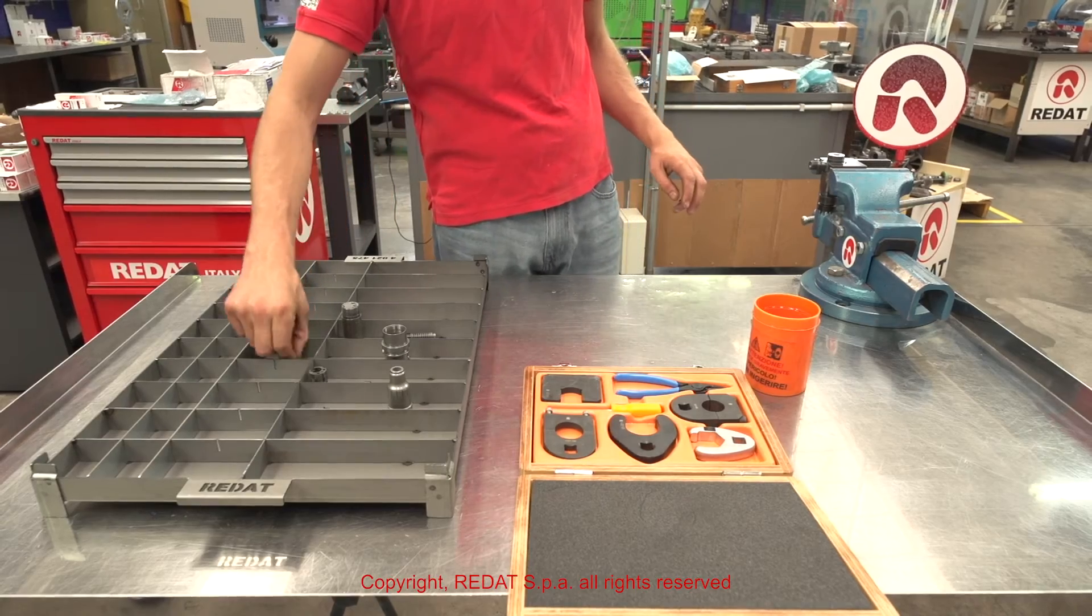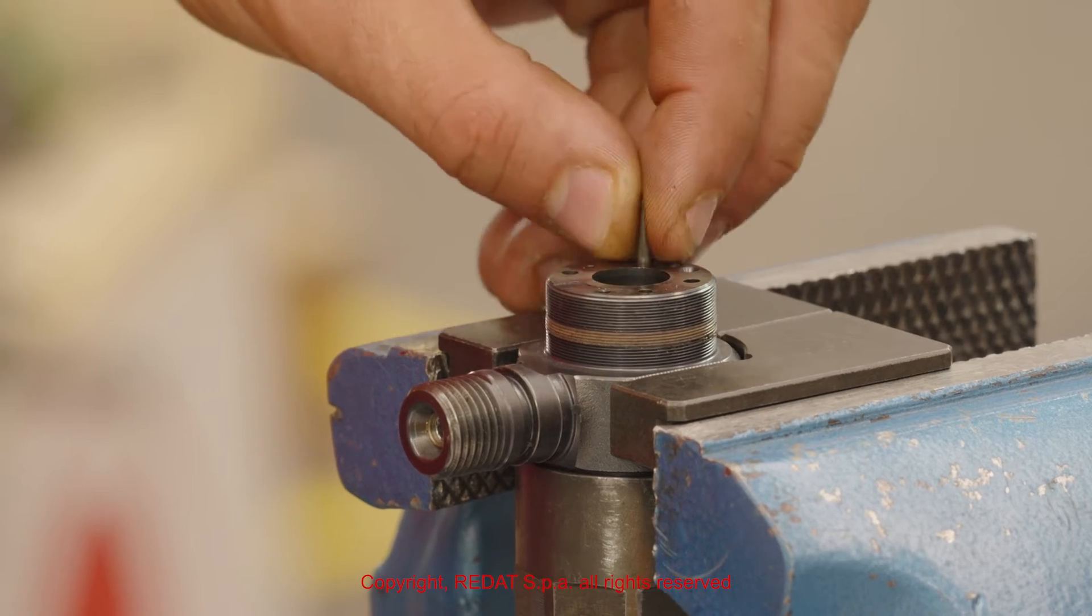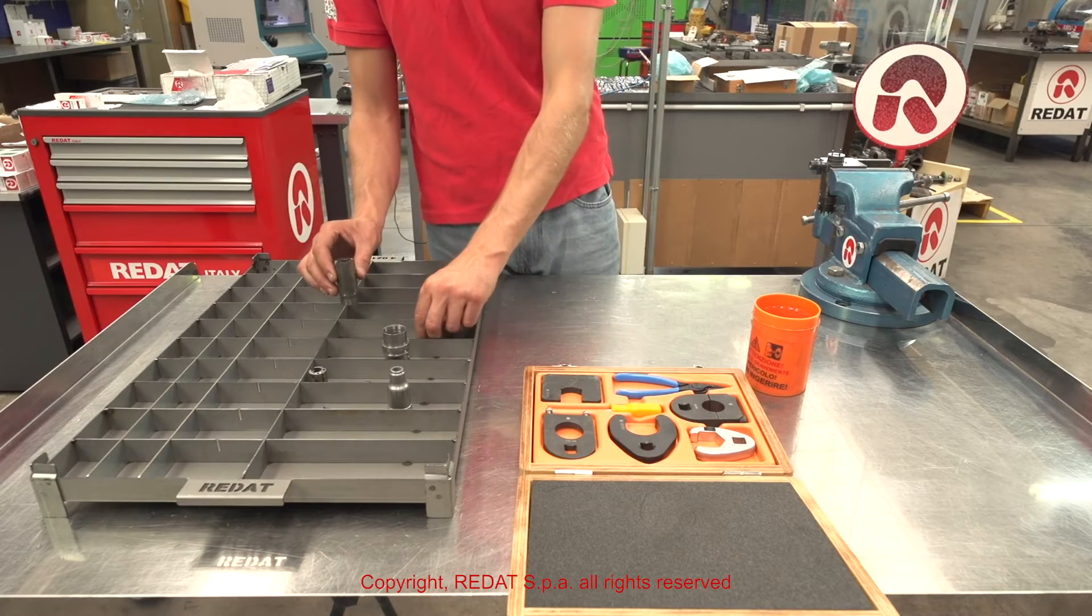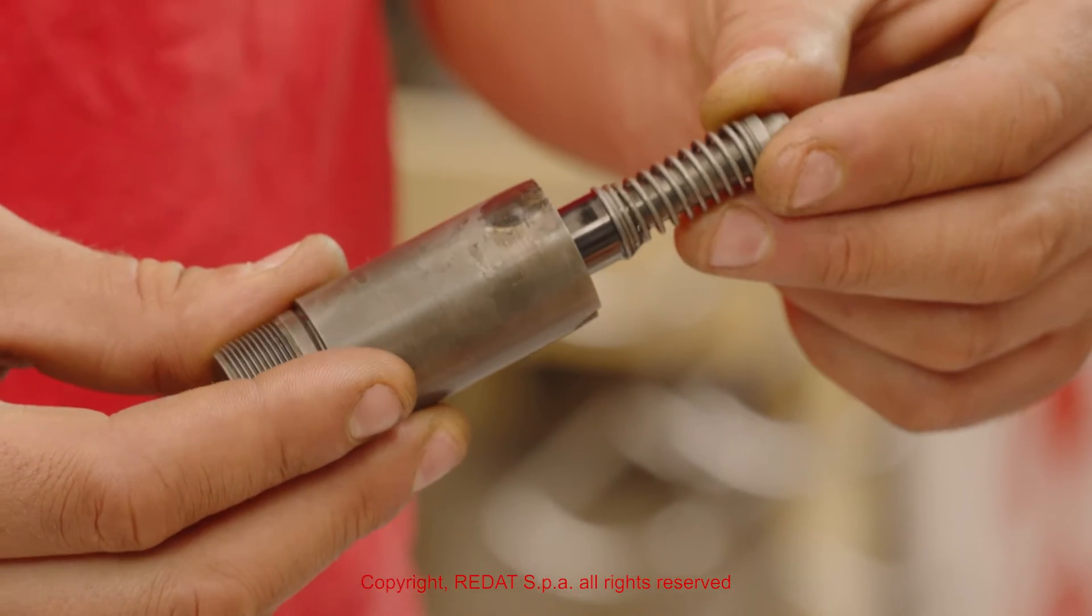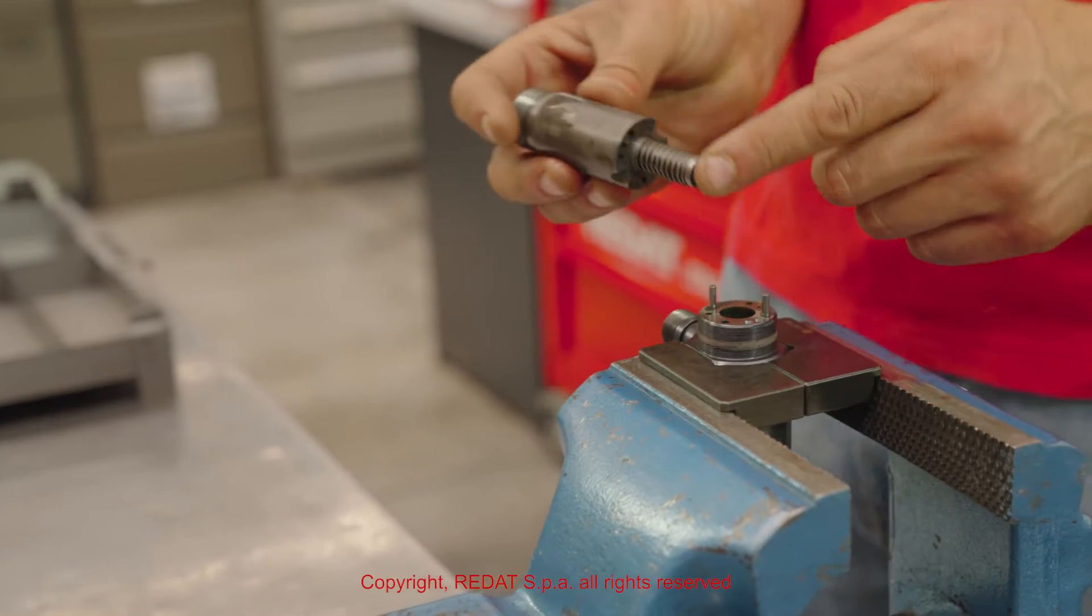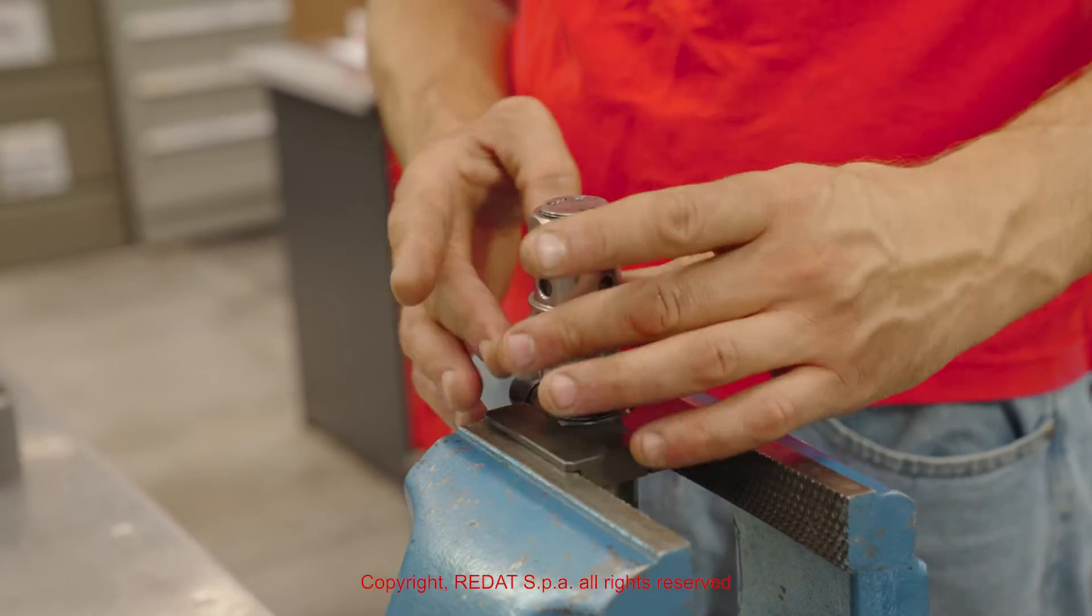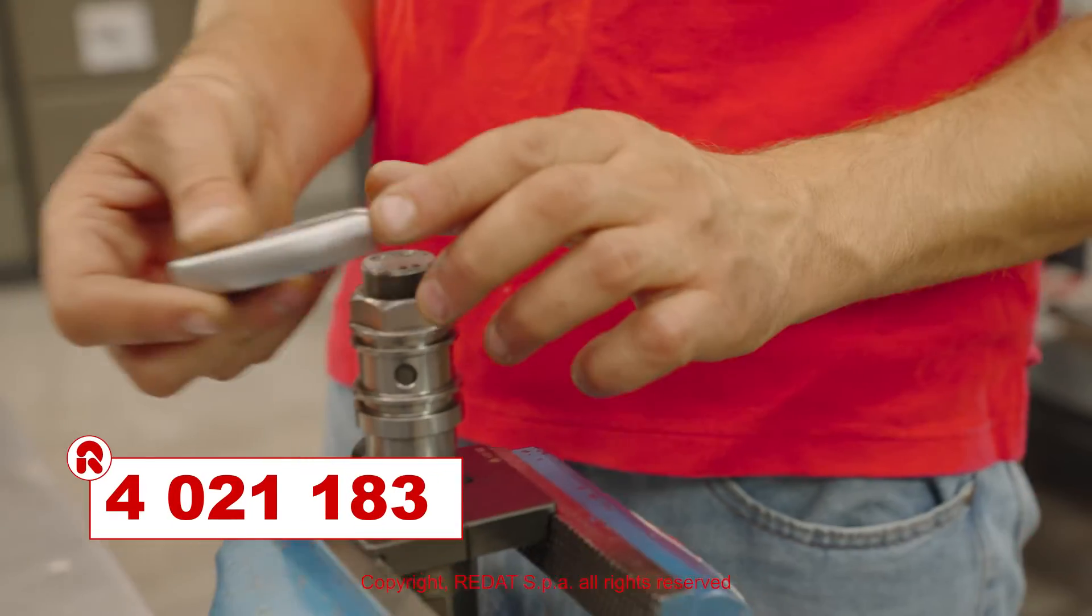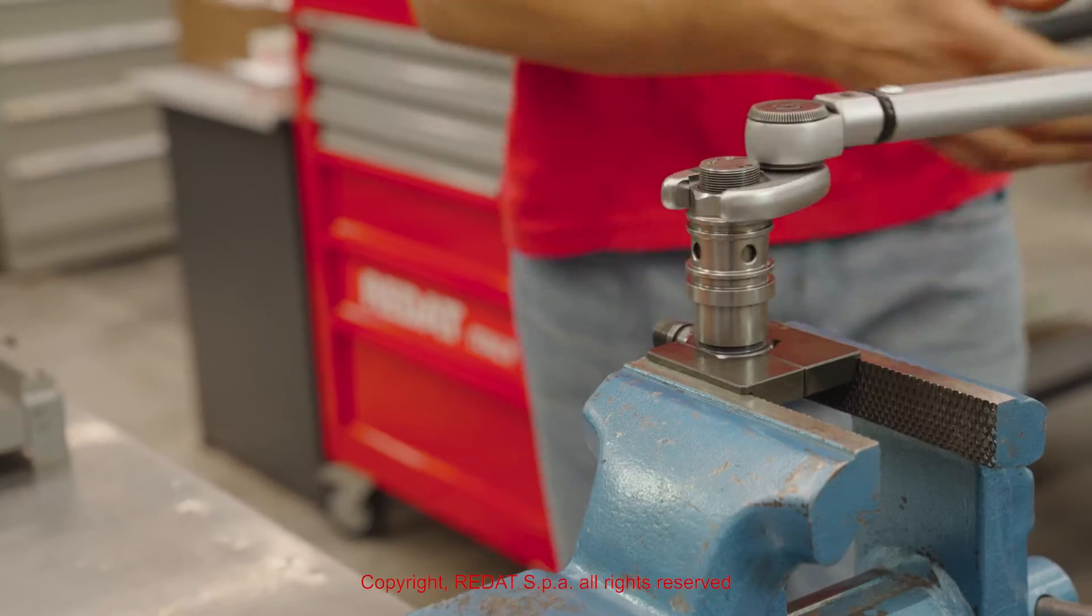We proceed by assembling the components shown. With the wrench 4 0 2 1 1 8 3, we tighten the injector nut to 90 Nm.